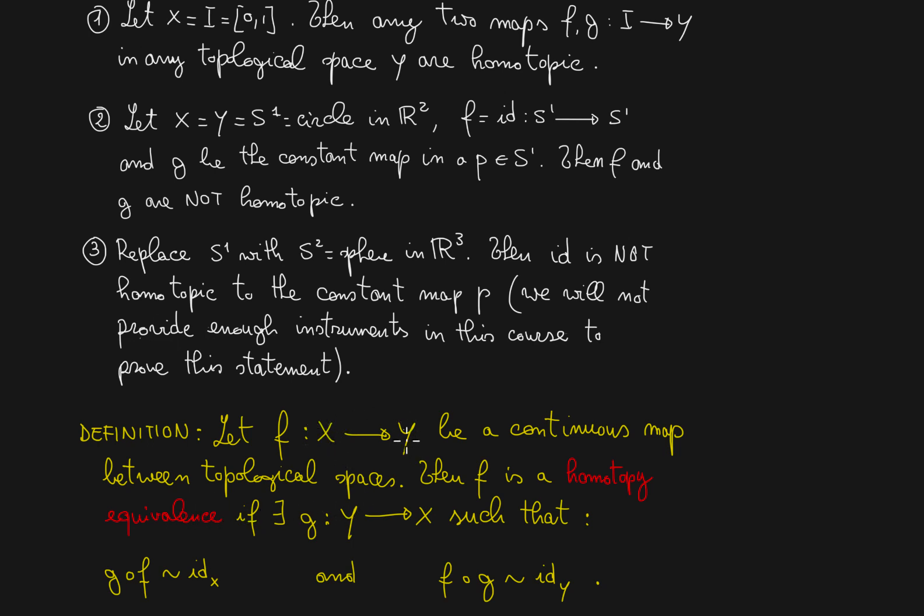This is the concept of homotopy equivalence between two topological spaces x and y, which is much more relaxed than homeomorphism. Because of course, if g composed with f is exactly the identity, it would be homotopic to the identity, taking as a homotopy just the trivial extension in x cross the interval. So equality between maps is a very special case of homotopy.